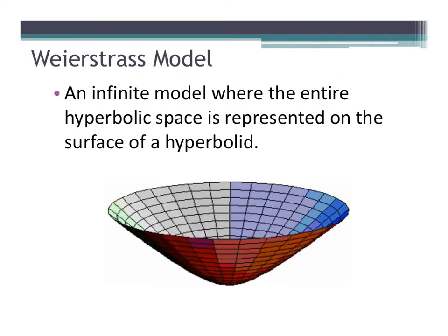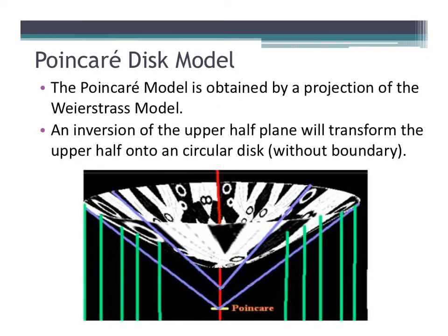Let's take a look at the Weierstrass model. This is an infinite model where the entire hyperbolic space is represented on the surface of a hyperboloid. This model will lead us to the Poincaré disk model, which is obtained by a projection of the Weierstrass model. It is an inversion of the upper half plane and will transform the upper half into a circular disk without boundary. So if you imagine standing at the point marked Poincaré and looking up at the disk, what you would see is a circle from your point of view, but the circle would have no boundary because this is a paraboloid without end.